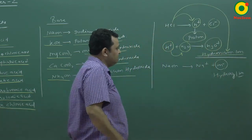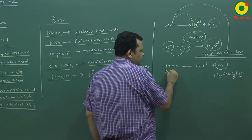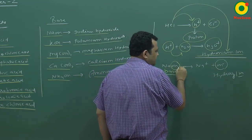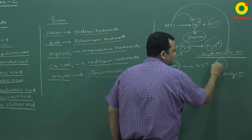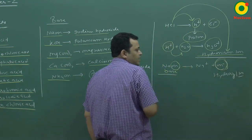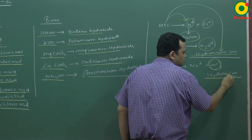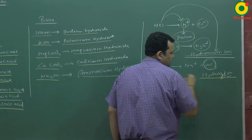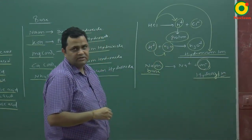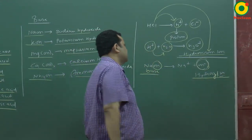Similarly, a base is identified by what it produces when it dissociates. The base when dissociated gives OH− ions in solution. This OH− is called the hydroxyl ion. So, an acid is a H+ donor and a base is an OH− donor.